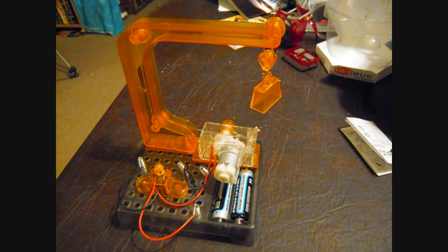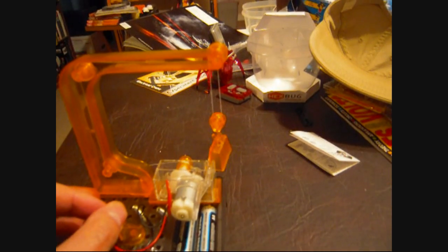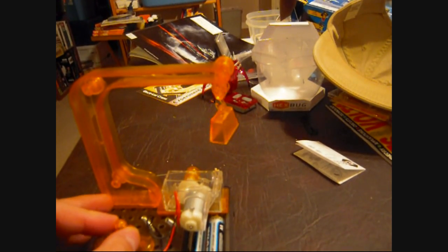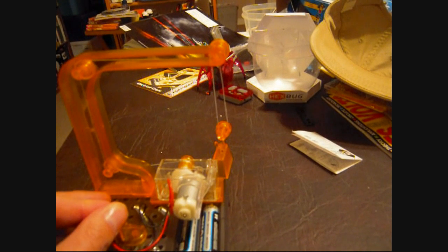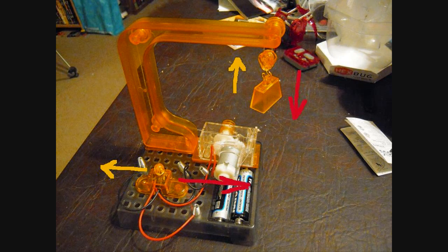This toy crane has an interesting motor effect. Watch. As you can see, the motor operates in two directions depending on the position of the switch, which causes current to flow in opposite directions through the motor.